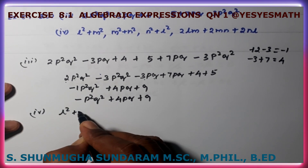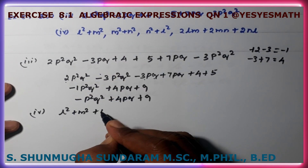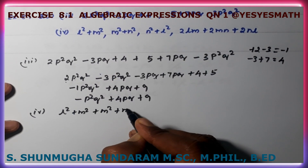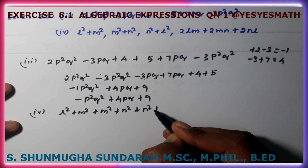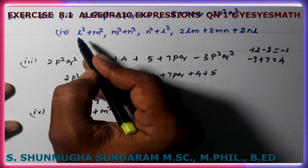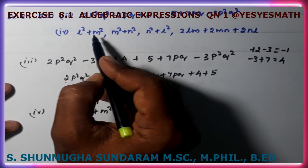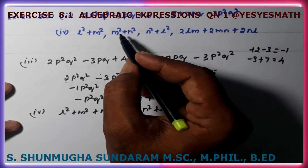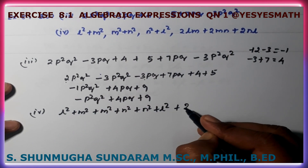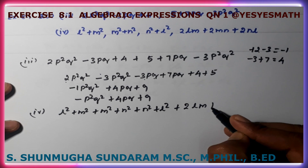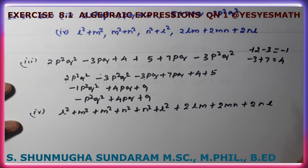Third part: L squared plus M squared, plus M squared plus N squared, plus N squared plus L squared. Each of these is a binomial — two terms. We identify each as a binomial: 2L squared, plus 2M squared, plus 2N squared, plus 2LM plus 2MN plus 2NL.